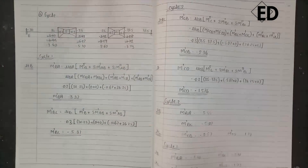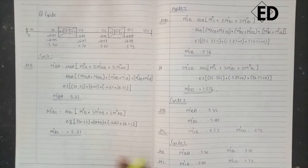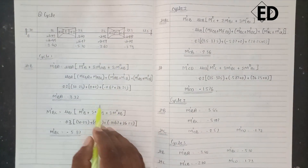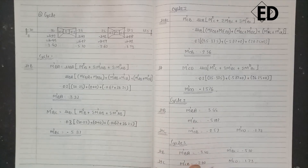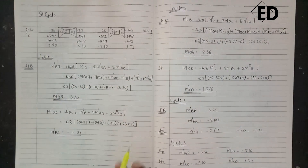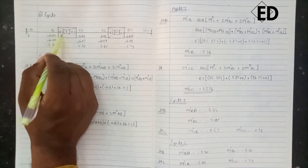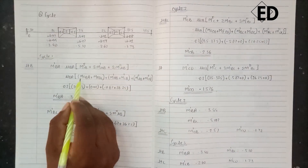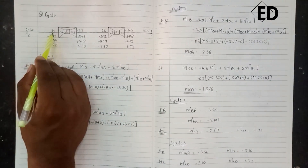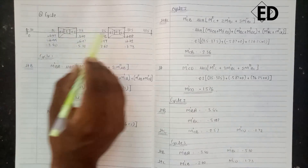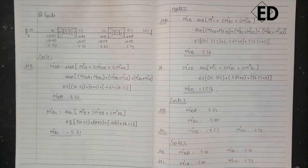It is very simple to calculate the moments by using Kani's method. This is the diagrammatic representation of the rotational contribution factors we calculated. The rotational factors are shown, and MF(B) = 30 + (minus 25) = 5, and MF(C) is also shown. Thank you.